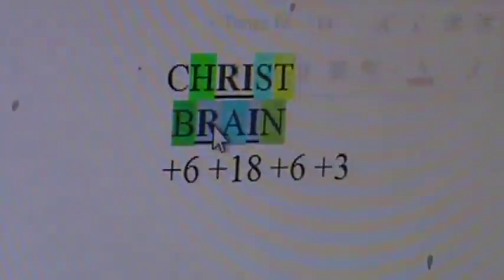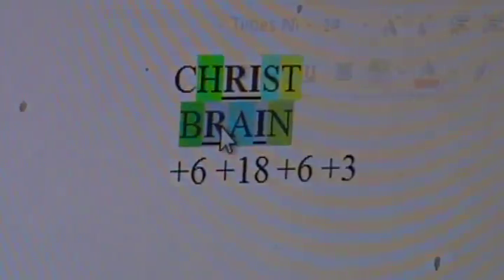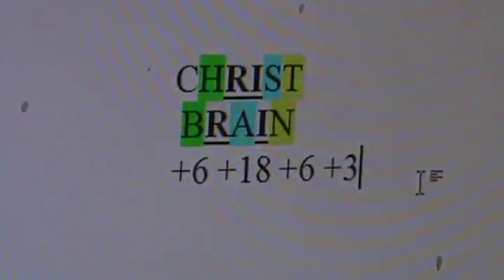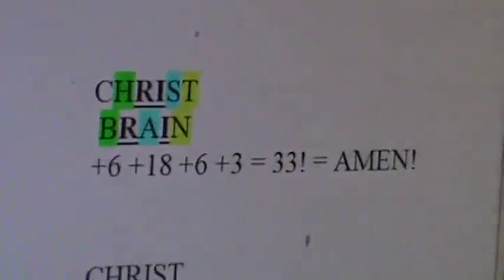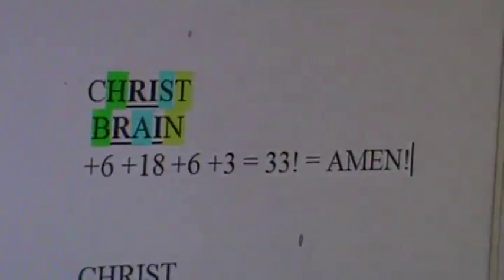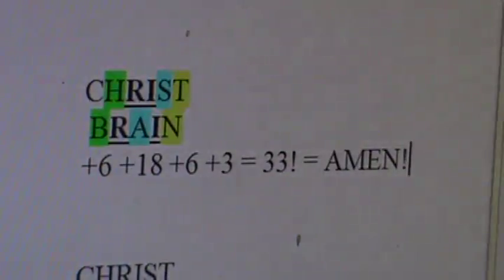There you go. So the grand offset is of course a very glaring number for three. No less, it's the famous Amen equals 33, equals Amen equals name. So there you go. In this video, we proved mathematically that Christ created the brain. Amen.